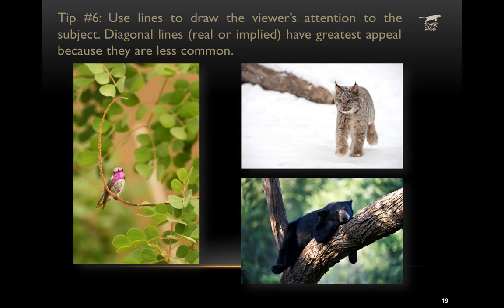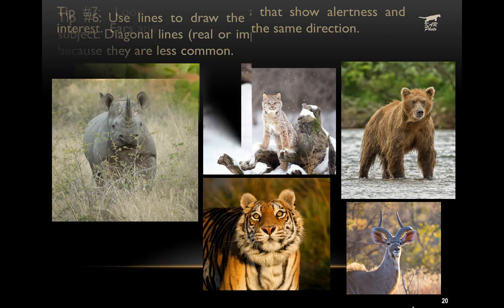The sixth tip is to use line to draw the viewer's attention to the subject. Diagonal lines, whether real or implied, have greater appeal because they're less common in our world — they're not vertical or horizontal. Look for incorporating diagonal line, and this can also be done in post-processing. It's not always easy to find this when composing a photo of an animal, so it's something to consider when looking back through your photos and picking out your favorites.